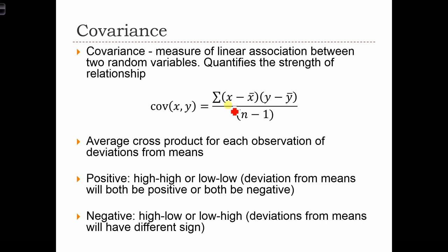We are going to define the term that appears in the sum as a cross product. For each i — this is the sum over all i's — we are going to look at the deviation of xi from its mean and the deviation of yi from its mean, and multiply those two deviations together. The multiplication of those deviations is going to be called the cross product.